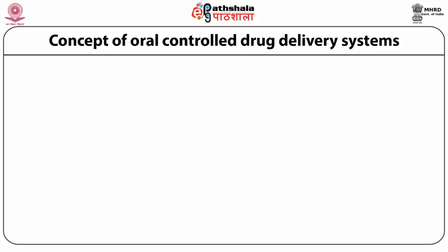All those limitations primarily lead to the conceptualization of the controlled drug delivery system. Taking oral controlled drug delivery as a case, two basic approaches can be followed: first, development of new, better, and safer drugs with long half-lives and large therapeutic indices; and second, effective and safer use of existing drugs through concepts and techniques of controlled and targeted drug delivery systems. We will emphasize on the second approach — devising a controlled drug delivery system.